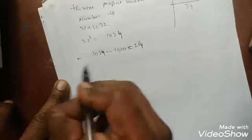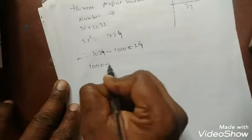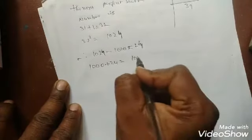Now we have to add 1000 plus 24 is equal to 1024. This one is a perfect square number, no doubt.